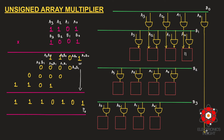The half adder performs the addition and generates the second bit of the final product, p1, as its sum. It also generates a carry that is propagated to the next stage. So in this stage we have a sum, named p1, and a carry forwarded onward.